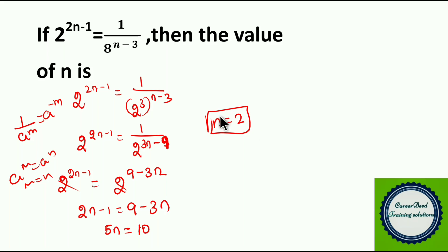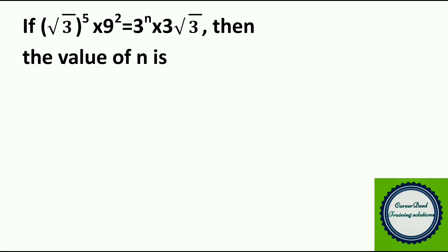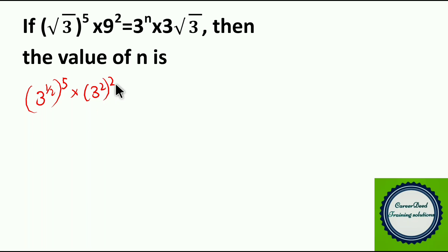So what we had to find is the value of n, and the value of n is 2. Hope you are understanding the problem. Now moving to question number 2. If root 3 to the whole power 5 into 9 squared equals 3 power n into cube root of 3, then the value of n is dash. Now you have to find the value of n. Root 3 can be written as 3 power (1 by 2) to the whole power 5, and 9 can be written as 3 squared, to the whole power 2.